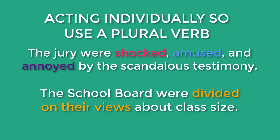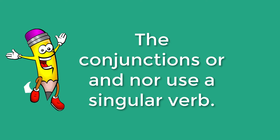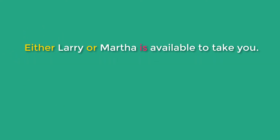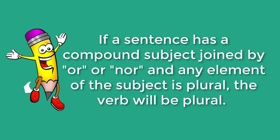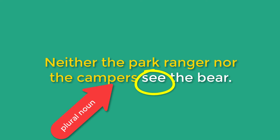In these two examples, you can see that the jury and the school board were not acting as a unit, but rather individually. Let's go on to the conjunctions OR and NOR. The conjunctions OR and NOR use a singular verb. For example, we can say either Larry or Martha is available to take you, or neither Larry nor Martha is available to take you. But if a sentence has a compound subject joined by OR or NOR, and any element of the subject is plural, the verb will be plural. For example, neither the park ranger nor the campers see the bear. One of the nouns is plural, campers, so we will use a plural verb, see.